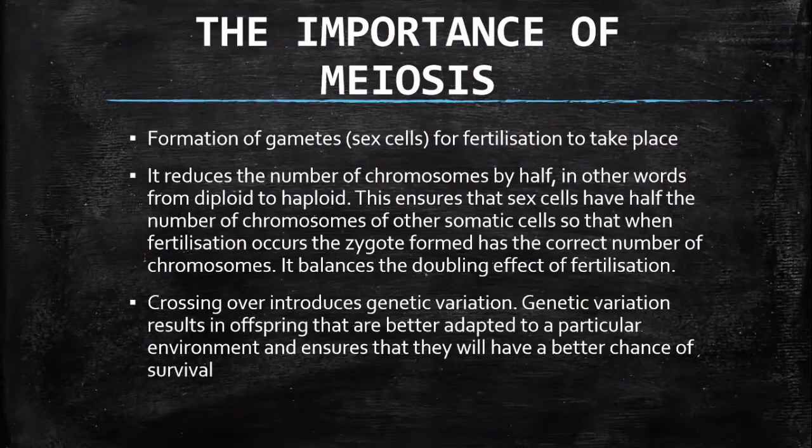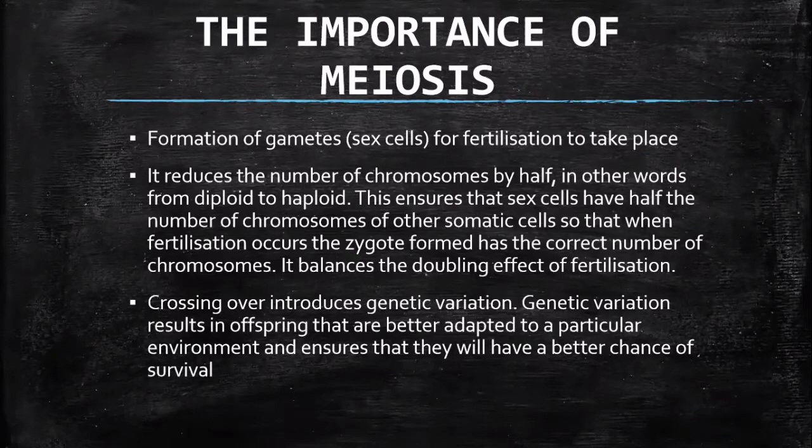Welcome back to part two of meiosis. During part two we are going to look at the importance of meiosis — why is meiosis important or why do we need meiosis to take place in our bodies? Meiosis is a very important process or type of cell division because it helps us to form what we call gametes or sex cells so that fertilization is able to take place and there's going to be a formation of offspring.